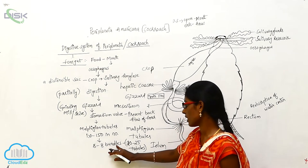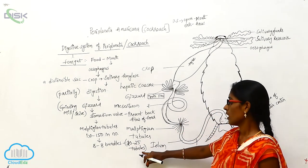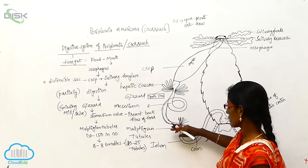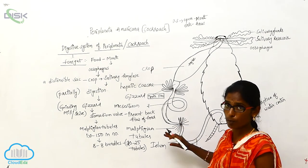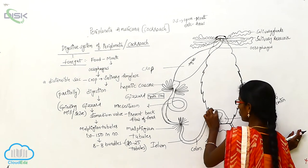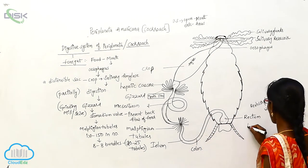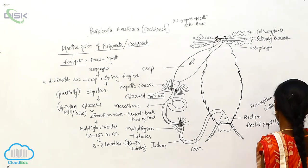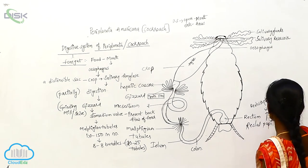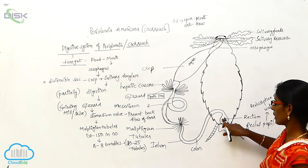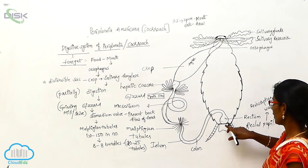The Malpighian tubules have 6 to 8 bundles, and each bundle has 20 to 25 tubules. They move freely among the visceral organs. The undigested or unabsorbed food material goes to the ileum, from the ileum to the colon, from the colon to the rectum. The rectum has longitudinal rectal papillae, which reabsorb the water content from the unabsorbed food material. The remaining unabsorbed and undigested food material is eliminated through the anus.